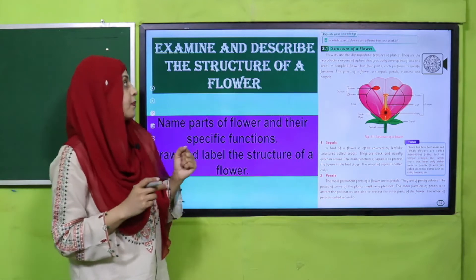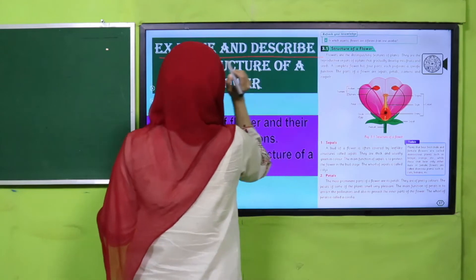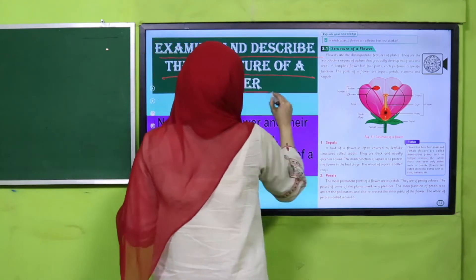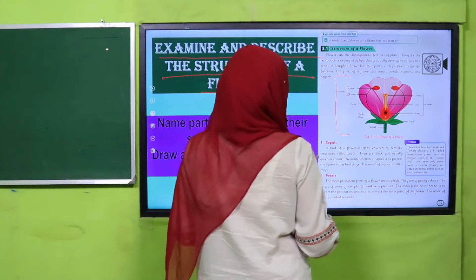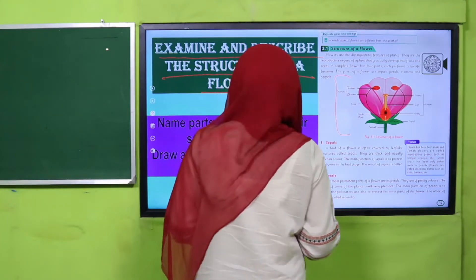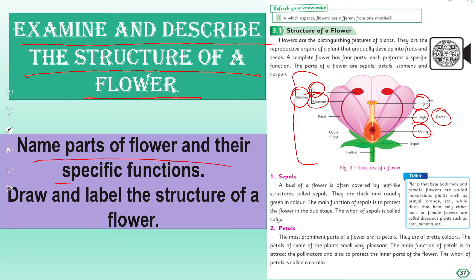In the first lecture we discussed, examined, and described the structure of a flower. Humne ek flower ki structure ko dissect kiya, uske internal structures ko dekha, uske male aur female reproductive parts ko bhi dekha. The male parts are called stamen — with two parts: anther and filament. The female part is called carpel — with three parts: stigma, style, and ovary. Inside the ovary there are ovules or eggs. Now quickly name the parts of flowers and their specific functions, and draw and label the structure of a flower.